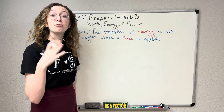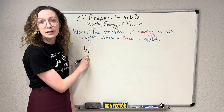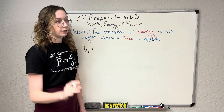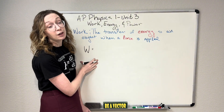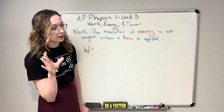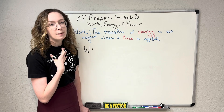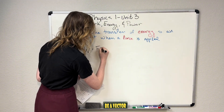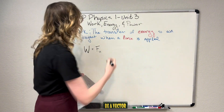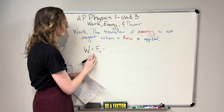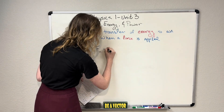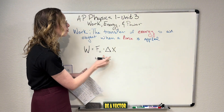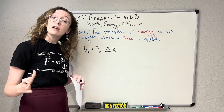The symbol for work is a capital W — pretty intuitive. We calculate it a couple of different ways. My fellow Beth and I like to write it as work equals the parallel component of force times displacement, where 'parallel' means the component of your force that is parallel to your displacement. Let's first talk about units: force is in newtons, displacement is in meters, so work is in newton-meters.